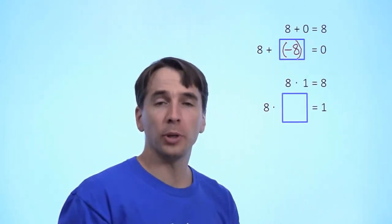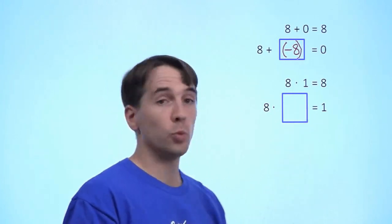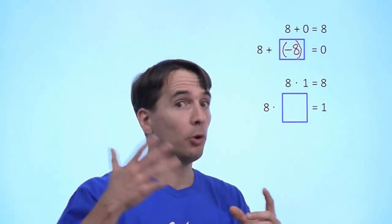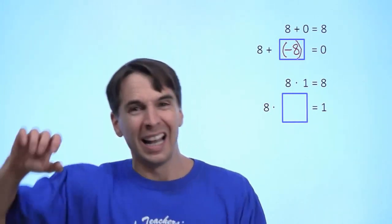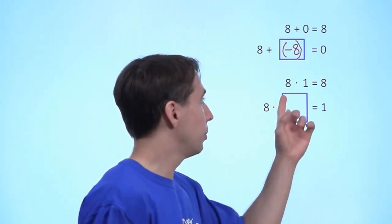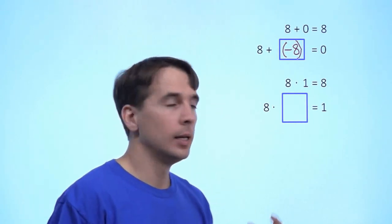Moving on to multiplication, the identity of multiplication is 1, because if I multiply 1 times any other number, I get that other number. So 8 times 1 is 8.